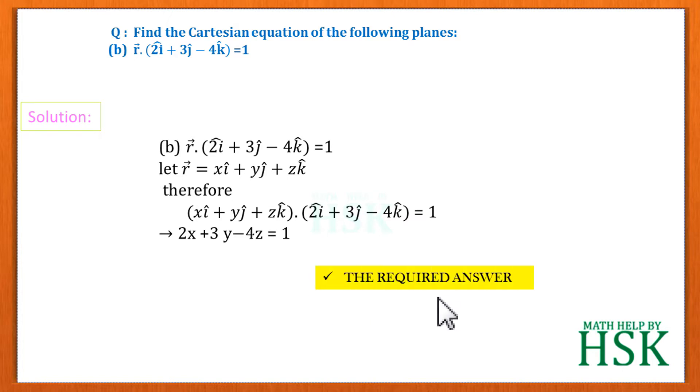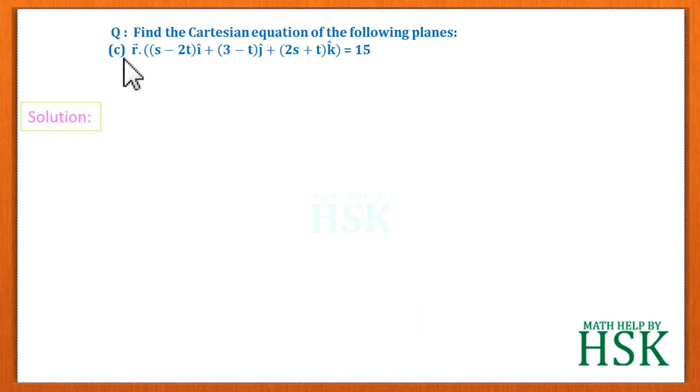Now the part c we have been given this equation. So this equation seems to be a little bit difficult because of these terms. Now this equation will become very easy if we consider that (s - 2t), in which s and t are simply constants, is just a coefficient of i, and simply (3 - t) is also a coefficient of j or j cap, and similarly (2s + t) is a coefficient of k cap.